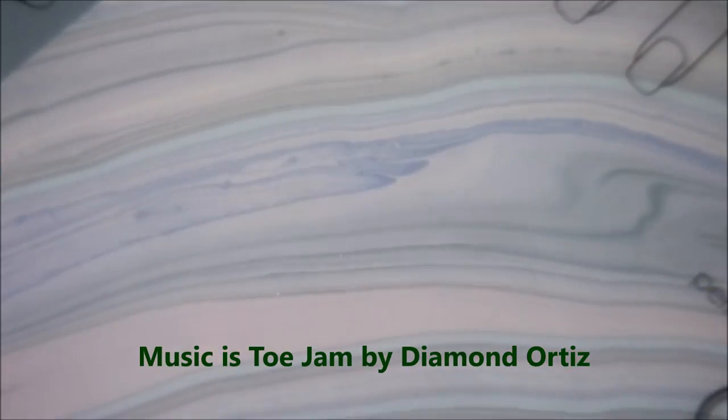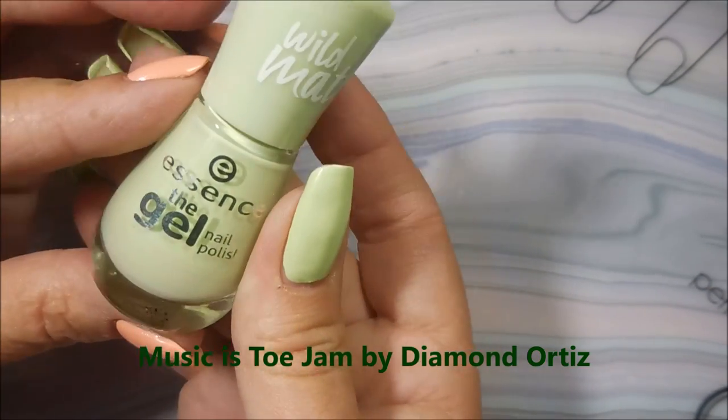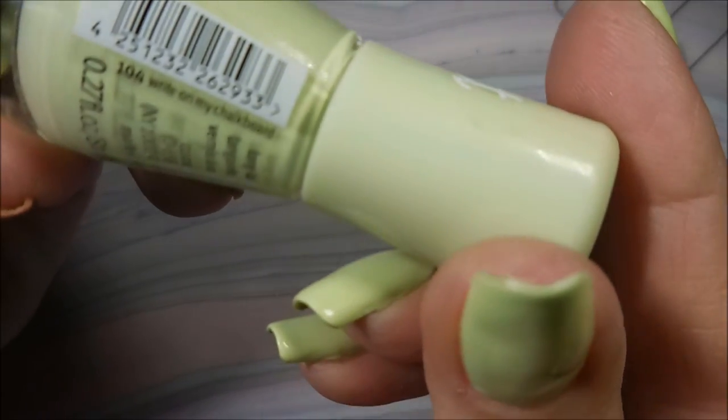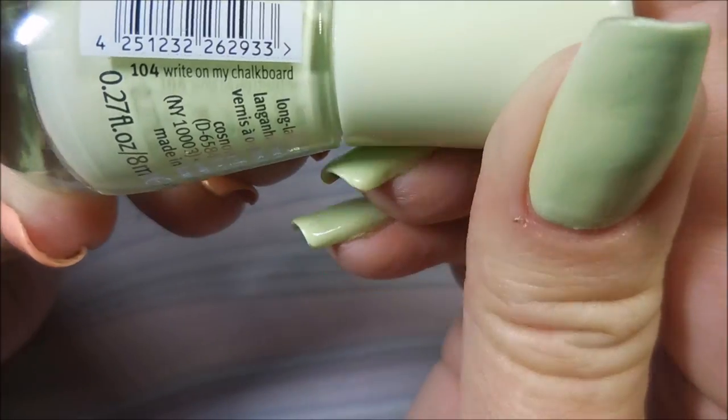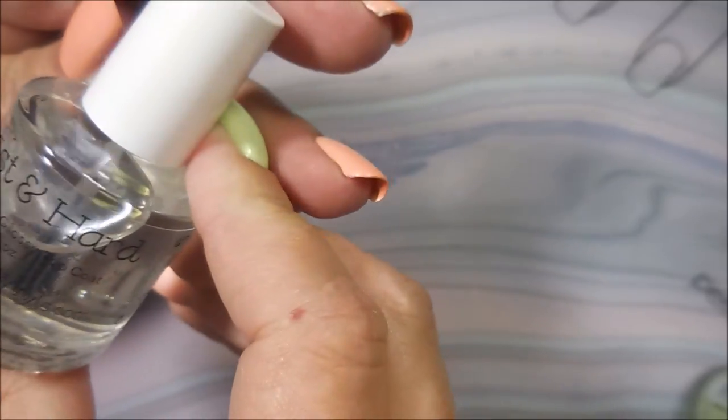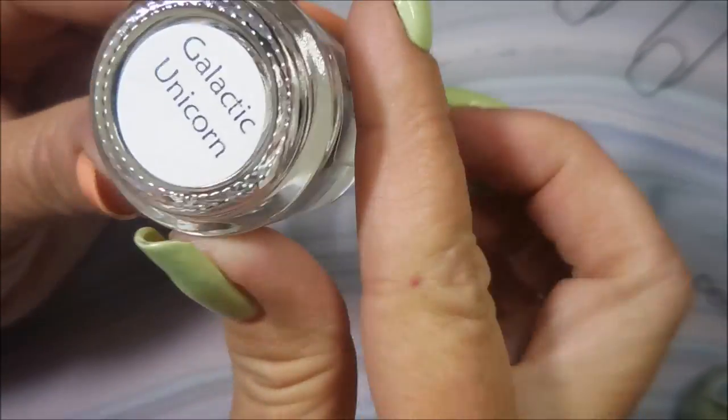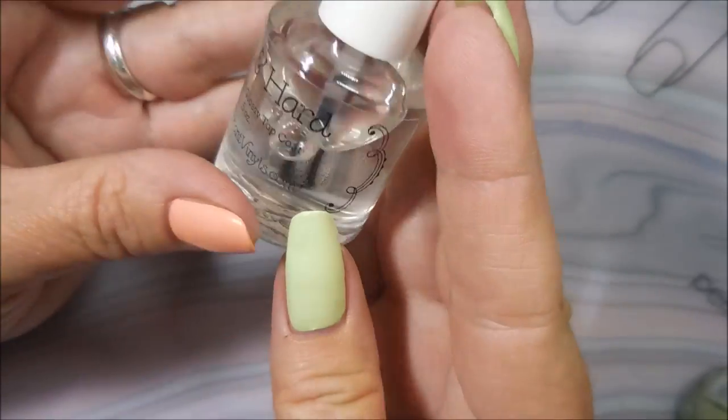I have started off with Peel Ease and I've used this Essence Gel Matte called Right on My Chalkboard. Now this one gave me a little bit of a struggle with the application because it's a matte polish.